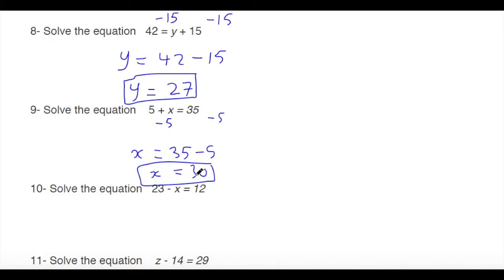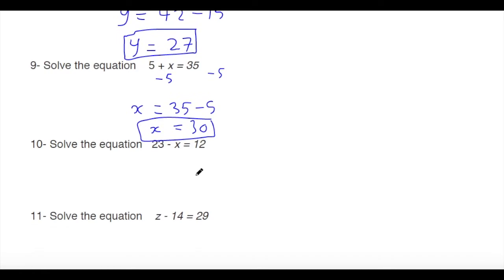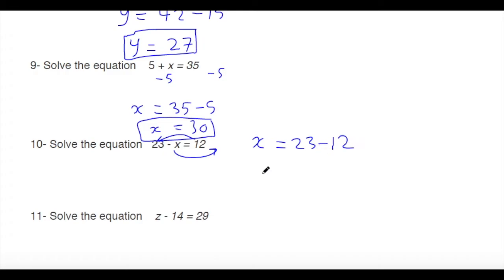Next: solve 23 minus x equals 12. In this case we can rearrange so that x equals 23 minus 12, giving x equals 11. We can verify: 23 minus 11 equals 12 — correct.